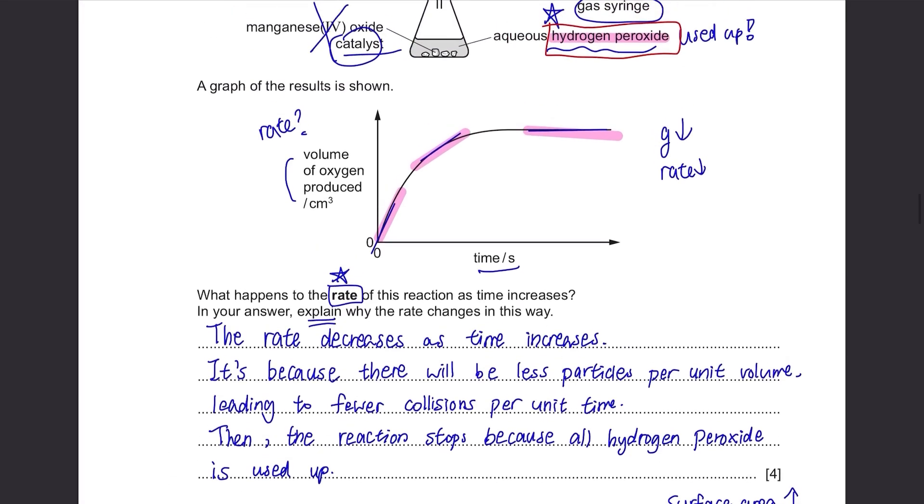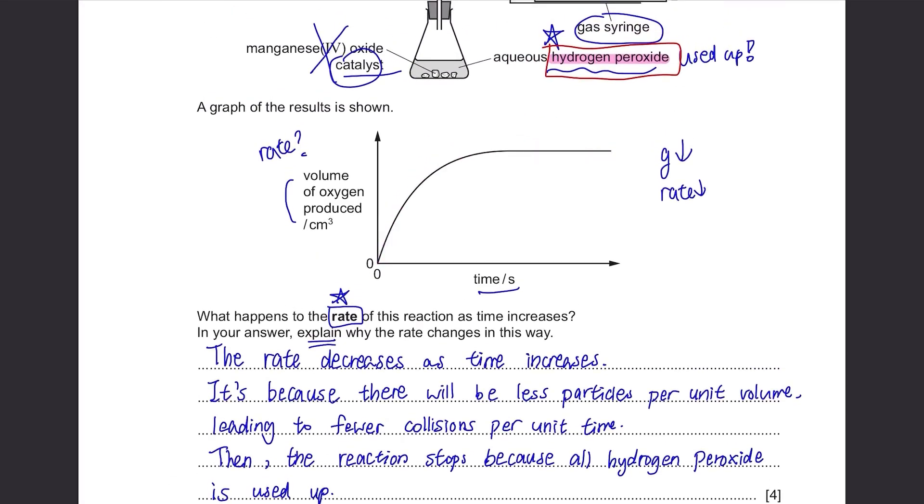So we can show it by drawing a graph with a steeper gradient like this. Then the next part of the graph, there is one important point to this. The maximum volume of oxygen produced should be equal to the initial graph. So it's just that this second graph has reached the volume of oxygen produced in a shorter period of time and it's not going to affect the volume of oxygen produced.